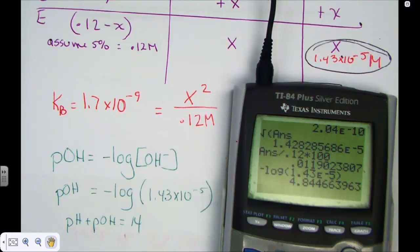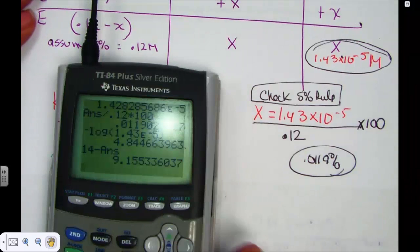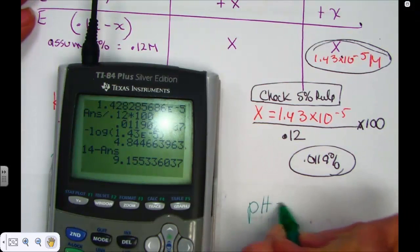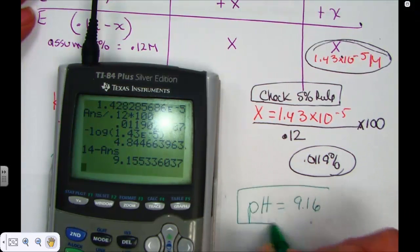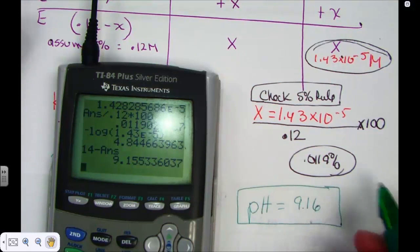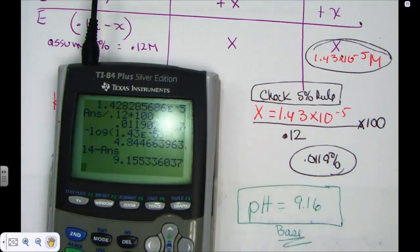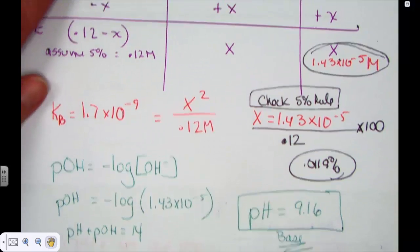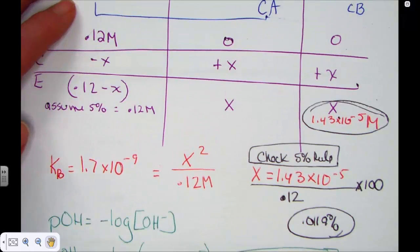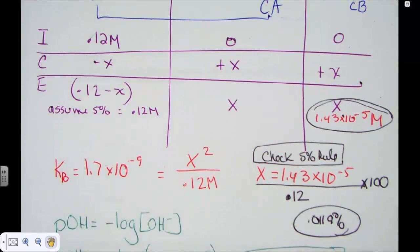When I hit negative log of the value we found for X, 1.43E negative 5, I get something called pOH. This is a base solution, so I know pH should be greater than 7. 14 minus that value, 14 minus pOH gives us pH. The pH of our solution, 9.16. Makes sense because this is a Kb problem. This definitely is a pH that makes sense for the basic range. Pause your video lesson here and really study these problems. Study letter A, B, and C. How are they different? How are they the same? And when you are ready, pick up with the next problem by clicking the next video.